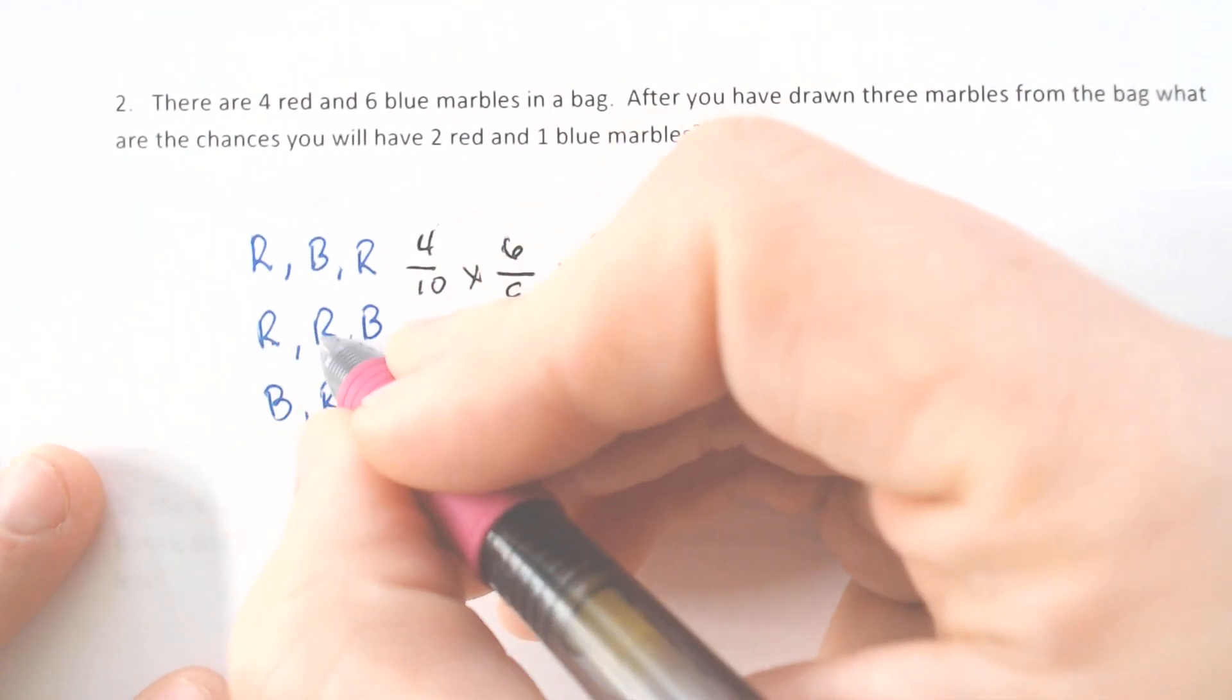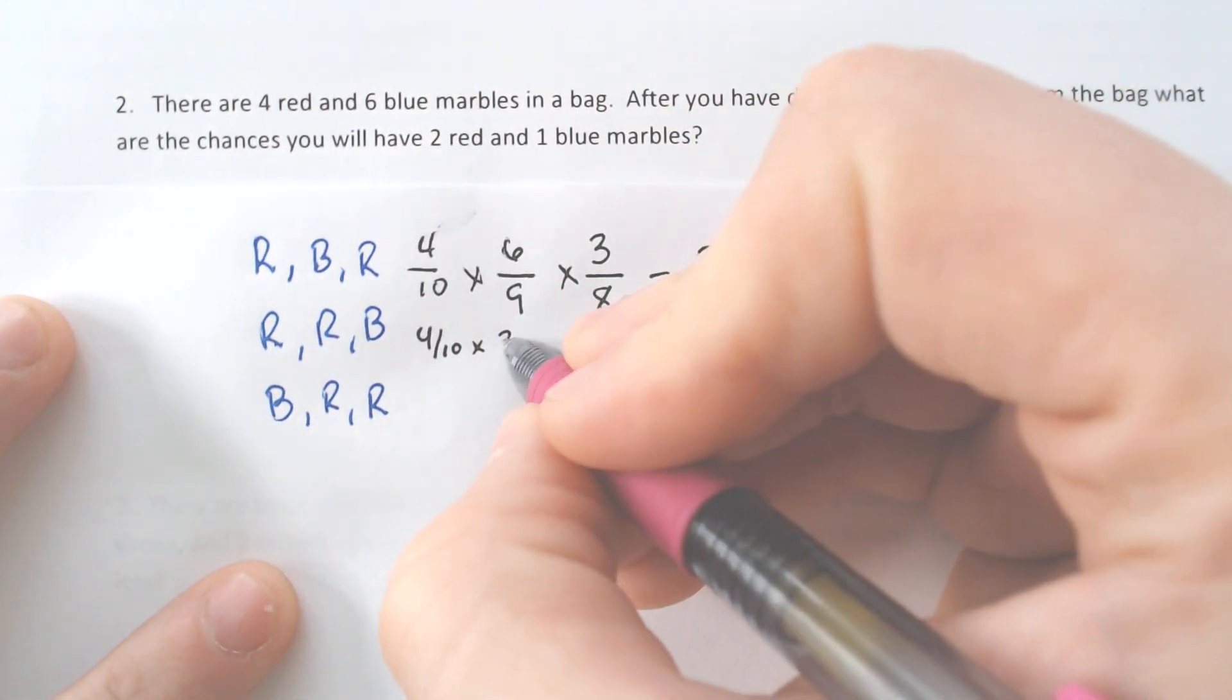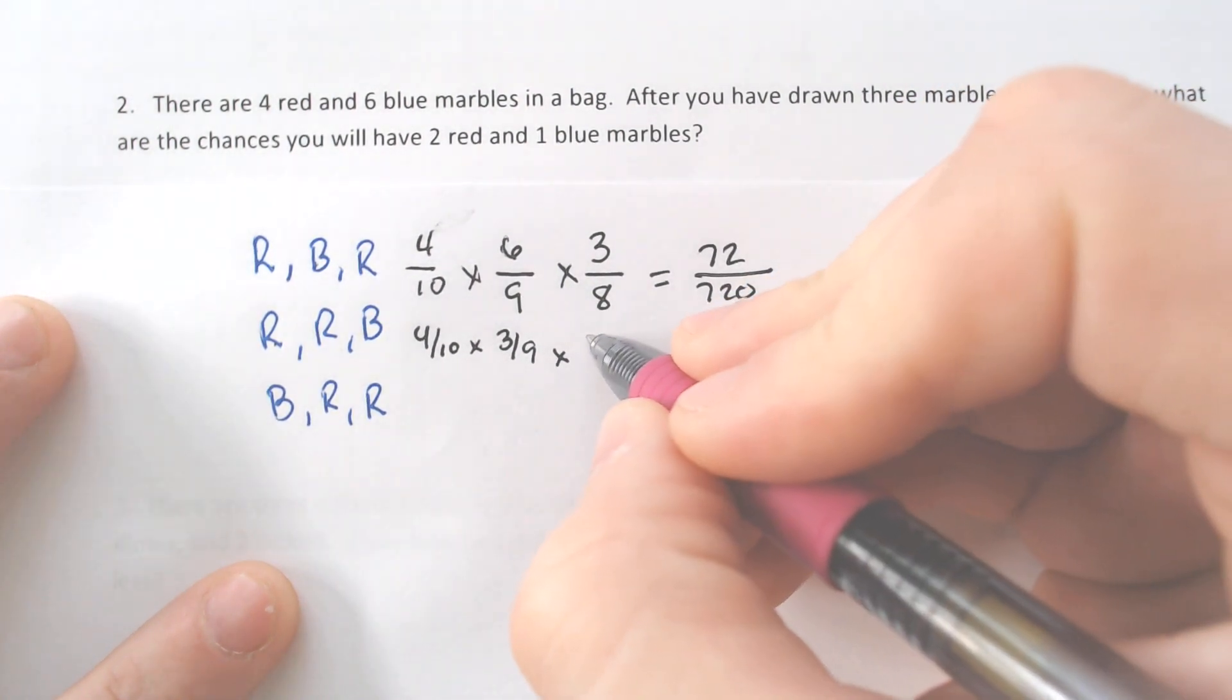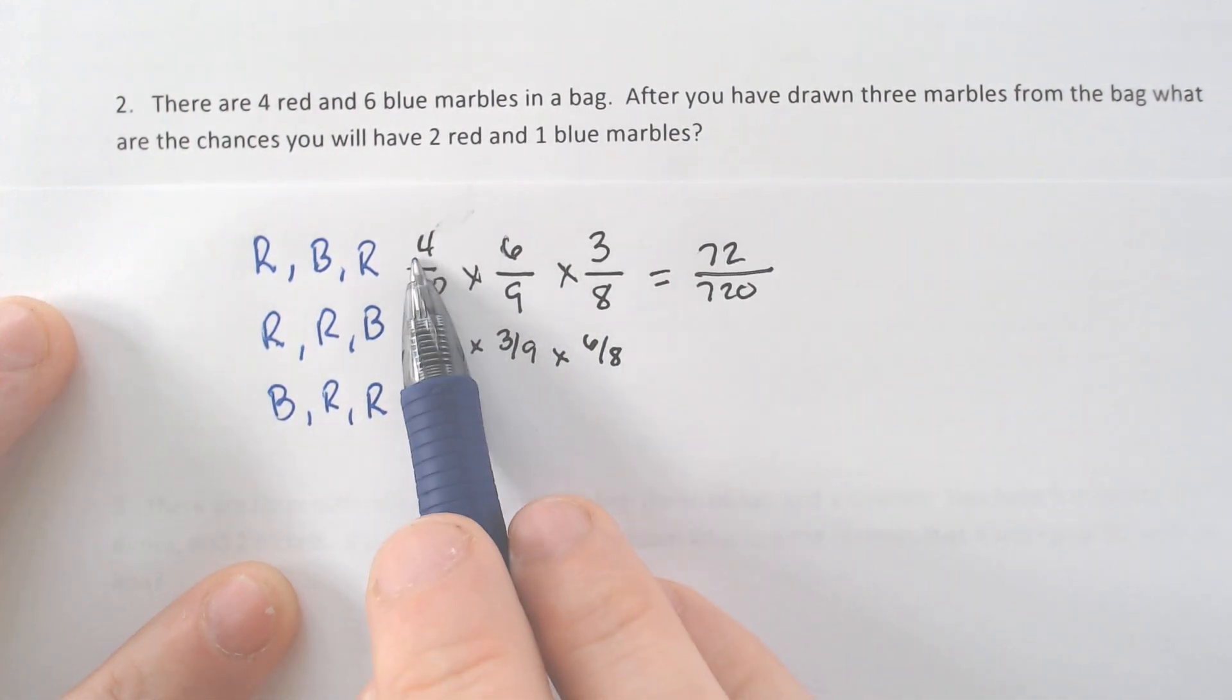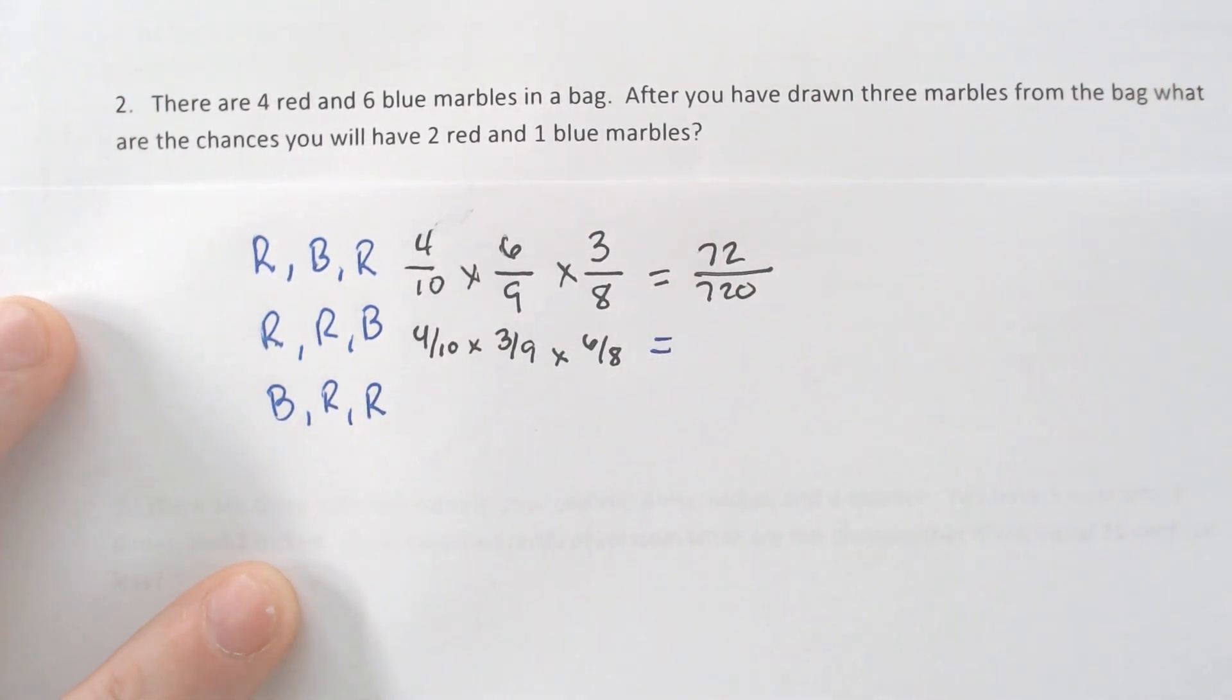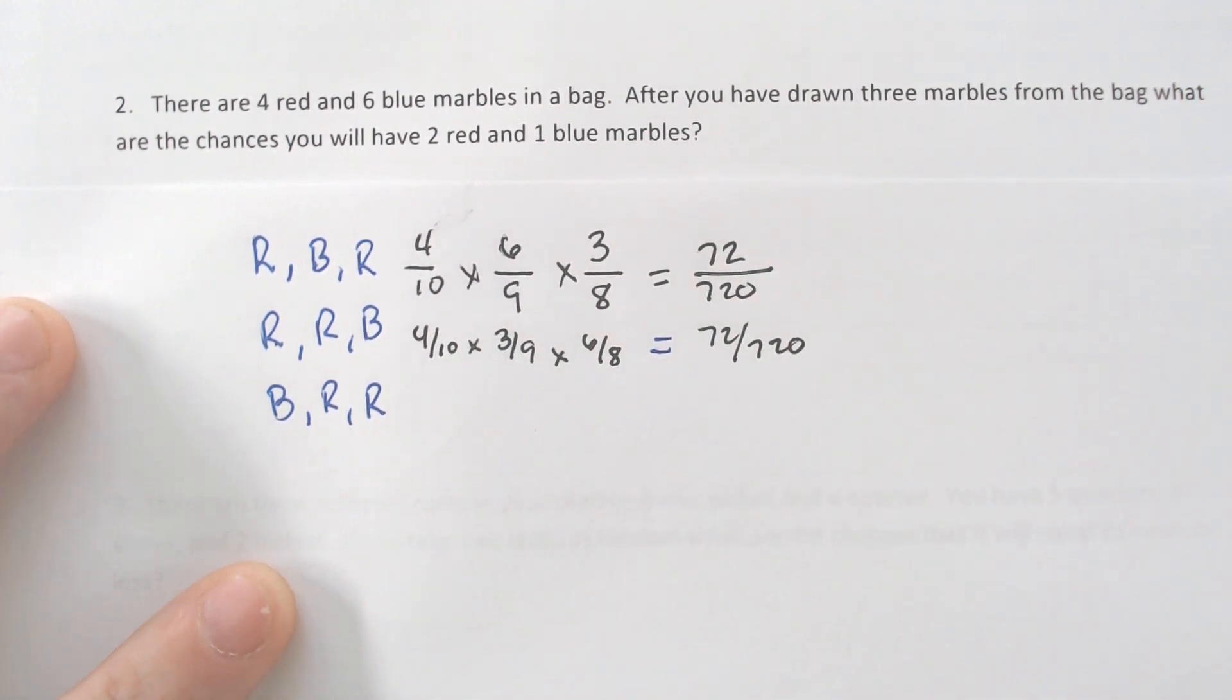Now, if we did red, then red, then blue, that would be four out of ten. And then another red would be three out of nine because you've removed one. And then a blue would be six out of eight. Now, here's a beautiful fact. Notice how the top numbers are still the same, four and three and six. Four and three and six, and the bottom numbers are still the same. So you're still going to get the exact same fraction, 72 out of 720. If you use your thinker, which you should be, you'd realize those are going to be the same.